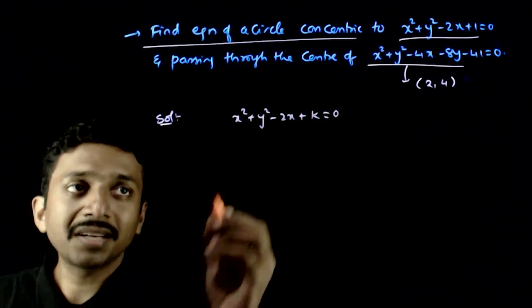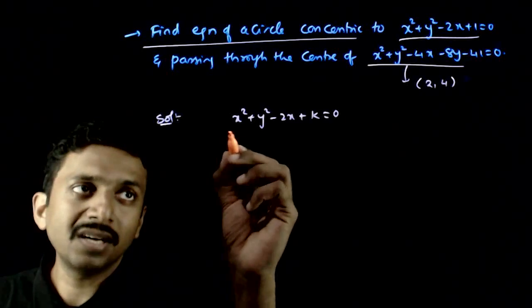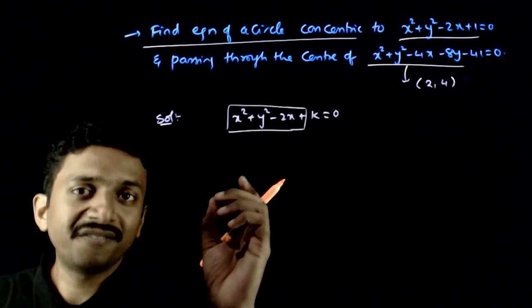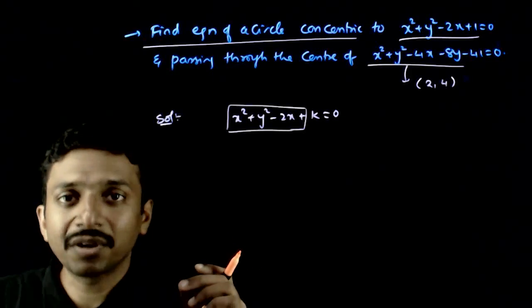We have seen that if two circles are concentric, then the difference of both equations can only be in terms of a constant.